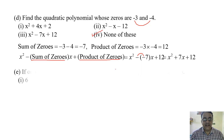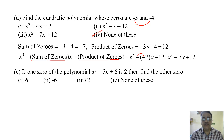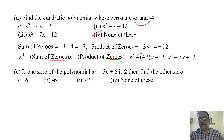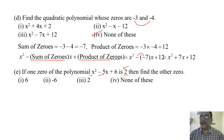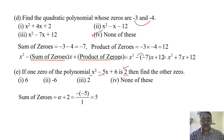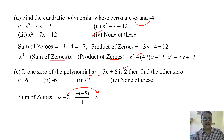Next question: If one zero of the polynomial x squared minus 5x plus 6 is 2, find the other zero. Let the other zero be alpha. So alpha plus 2 equals minus b by a, where b is minus 5 and a is 1, giving 5. Shifting 2 to this side: alpha equals 5 minus 2, which is 3.